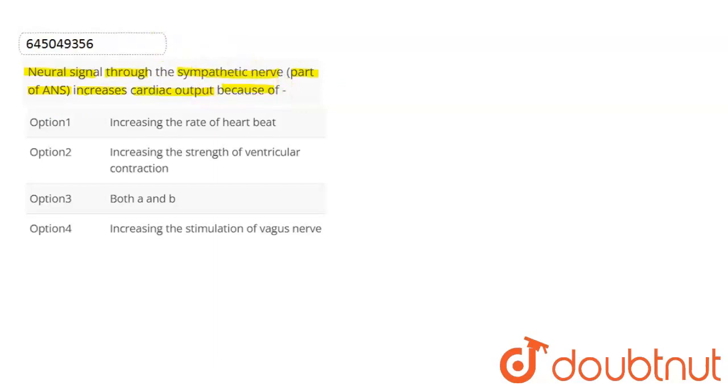In the autonomic nervous system, we know there are two parts: the sympathetic nervous system and the parasympathetic nervous system. This question specifically asks about the sympathetic nervous system.